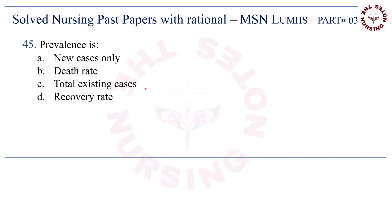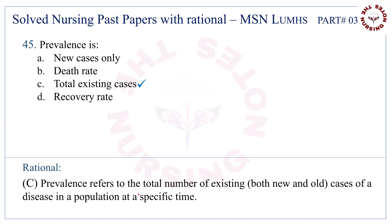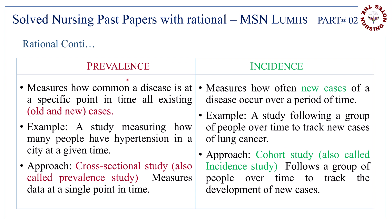Question number 45. Prevalence is — the correct answer is C — total existing cases. This is the basic difference between prevalence and incidence.